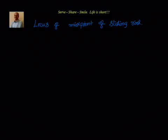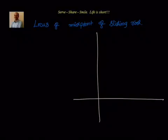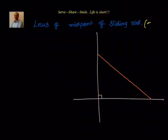There is a wall and there is ground which are at 90 degrees with each other, and there is a rod which is sliding. We can take the length of the rod as L. In this example we will take the length of the rod as 5 units.